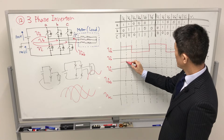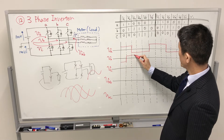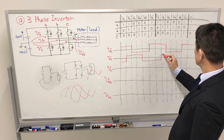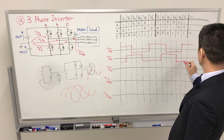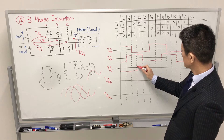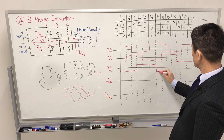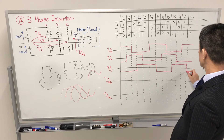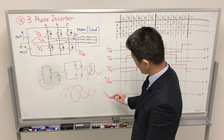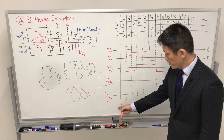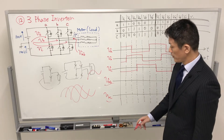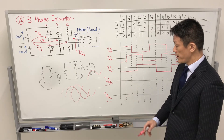If you already understand the single-phase inverter from the previous lecture, we can now discuss the line-to-line voltages. We will discuss VAB and VBC. VAB is defined as VA minus VB.